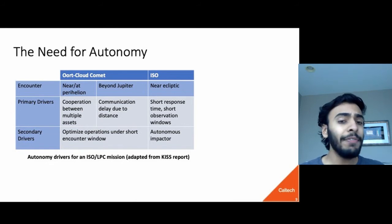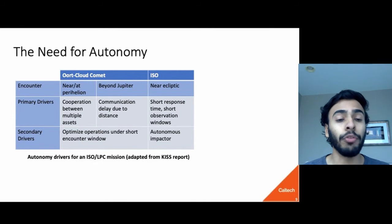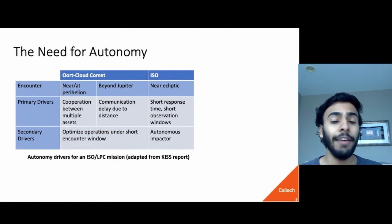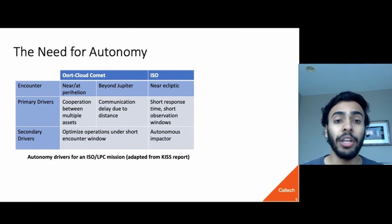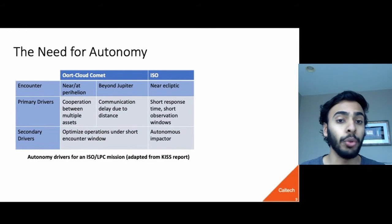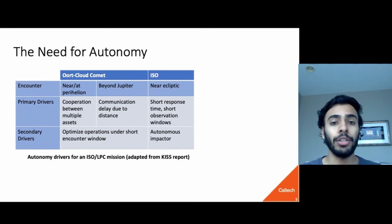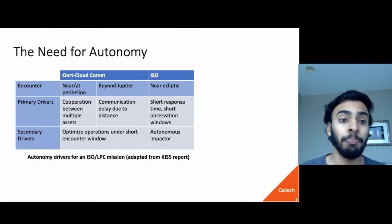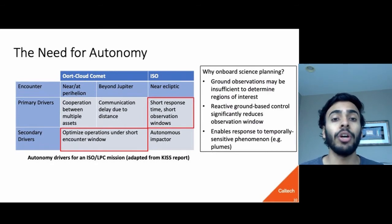What is the specific case for autonomy in such a mission? We consider primary and secondary drivers for both a long-period comet mission and an ISO mission separately. For a long-period comet, primary drivers relate to cooperation between multiple assets and potential communication delay if the flyby occurs in deep space, with secondary drivers being optimization of operations under a short encounter window. For an ISO, the observation windows are much more condensed due to difficulty tracking the object, requiring an optimization-based approach to science. For an ISO, we might also consider an autonomous impactor, which would require more autonomy from a navigation perspective.